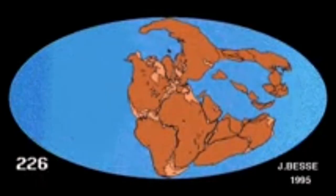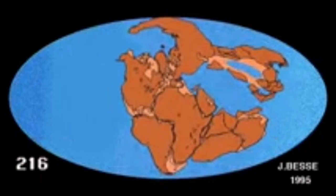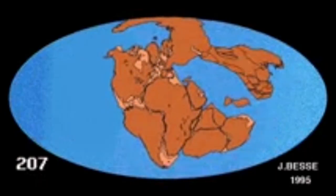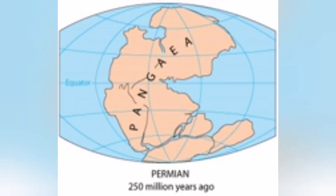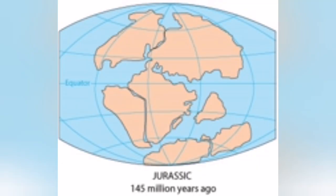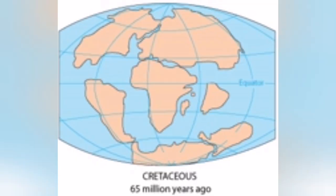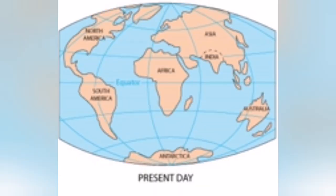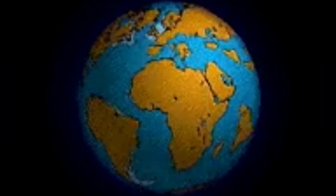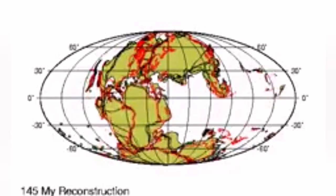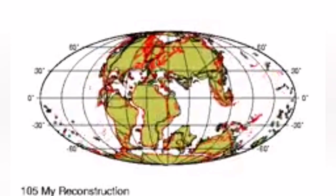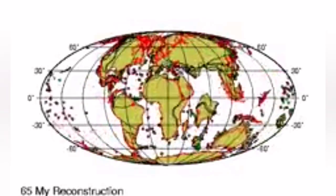One of the most famous oceans is the Tethys Ocean, the remnants of which are the Persian Gulf, Caspian Sea, Black Sea, and the Mediterranean Sea. The creation and closure of this ocean is the subject of this video.